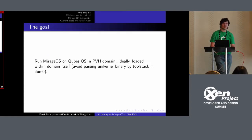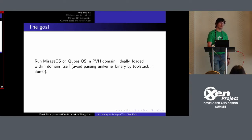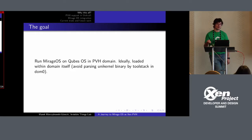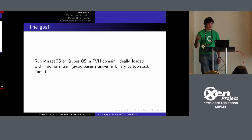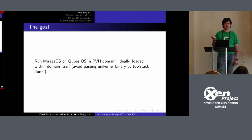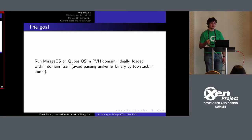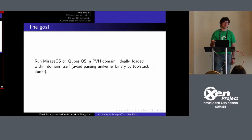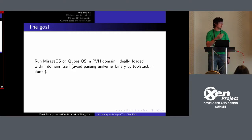The goal is to run MirageOS in Qubes in a PVH domain, because in Qubes we want to get rid of PV completely. Currently in Qubes we run most VMs as PVH — Linux VMs — and those we can't, we use HVM. This includes PCI pass-through and Windows, possibly other operating systems. But we still have a few places where we need PV: this is DOM0, which is hopefully going away soon, and also all kinds of stub domains and unikernels, which are PV only right now.